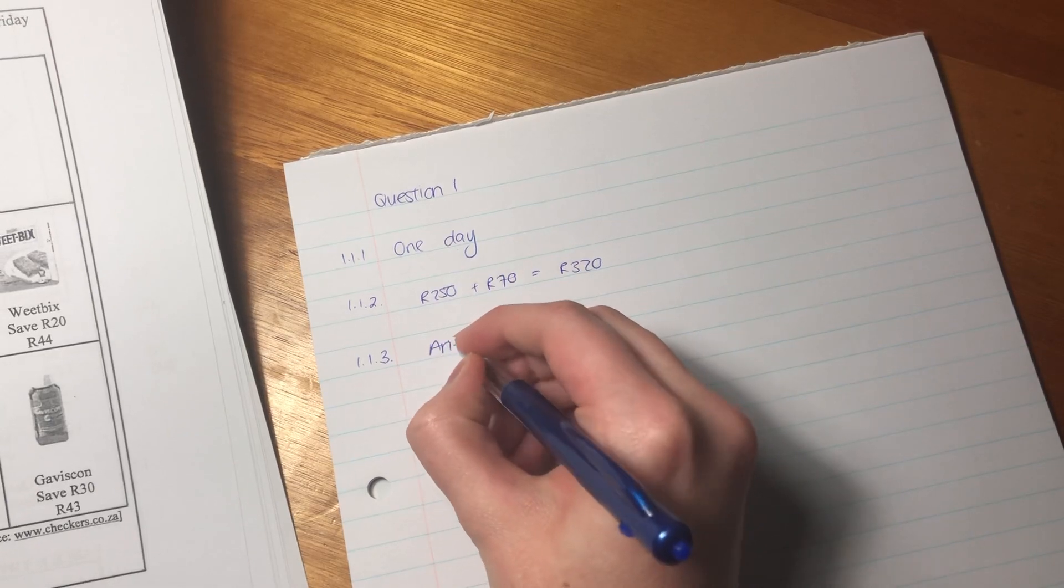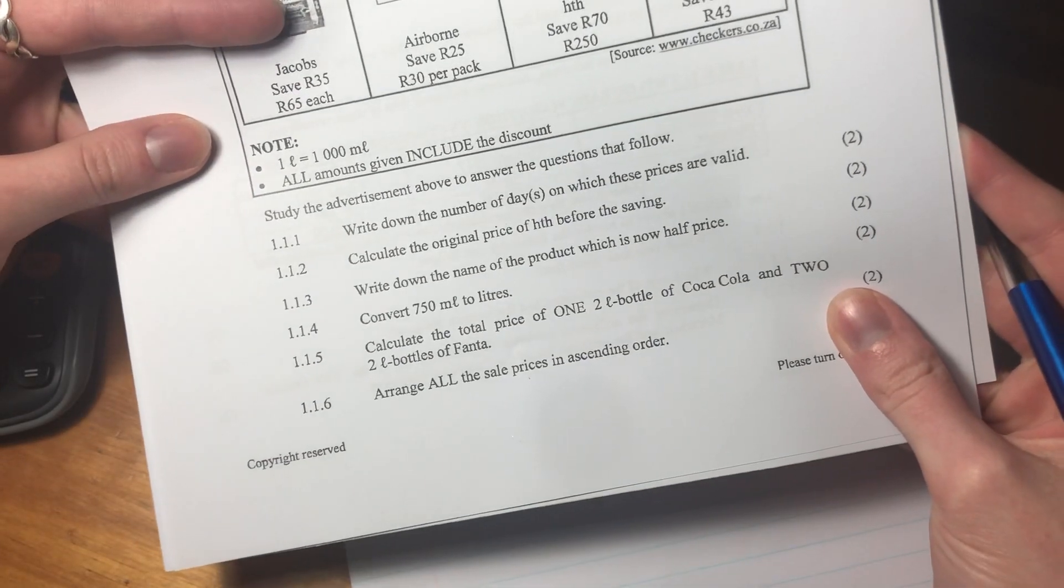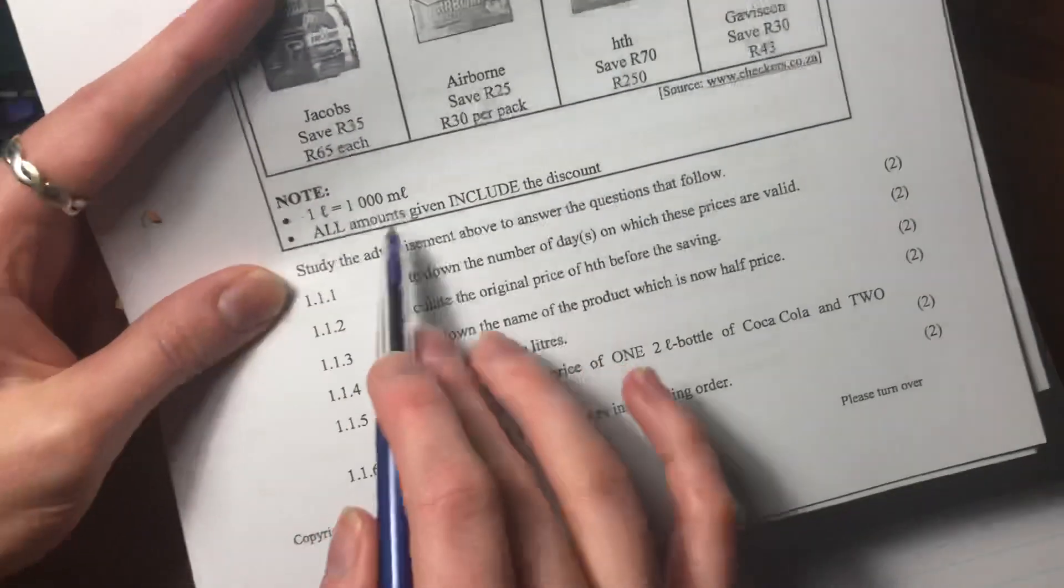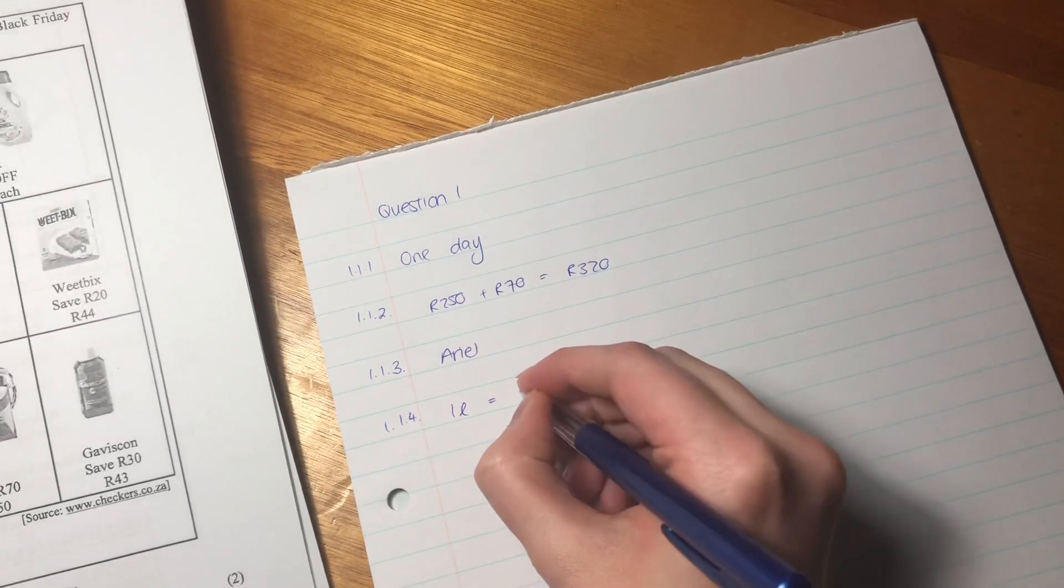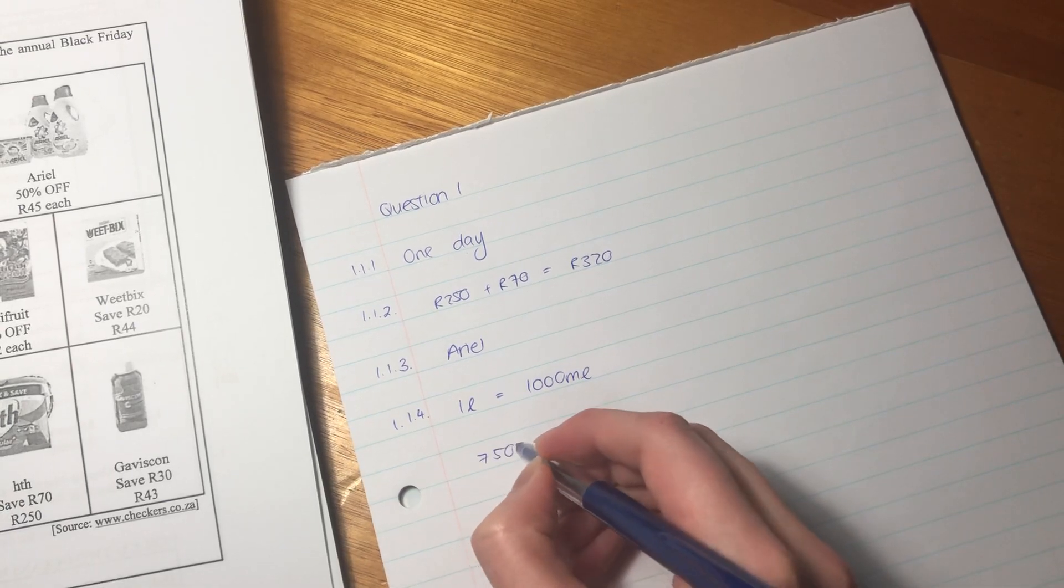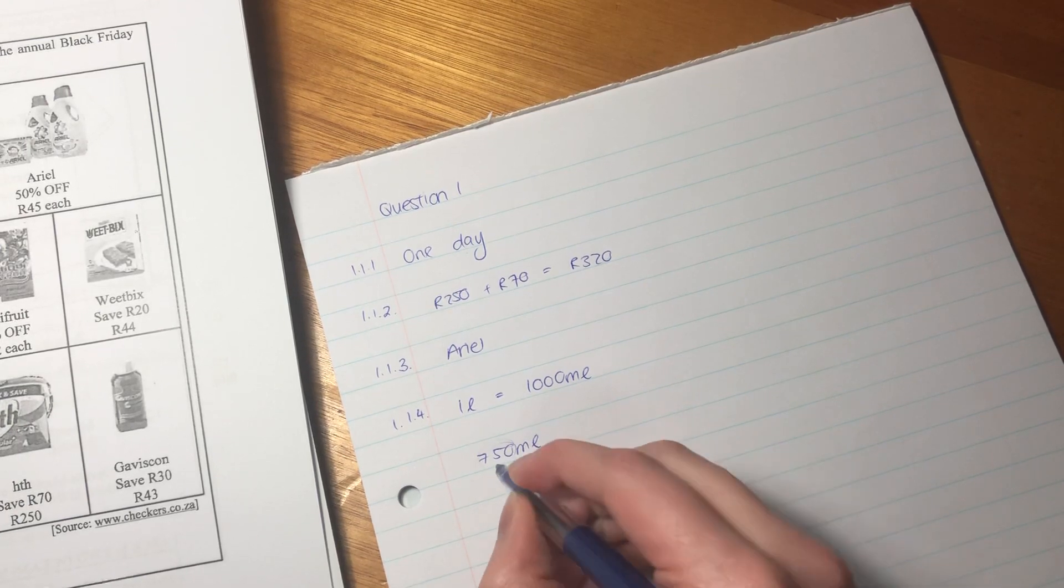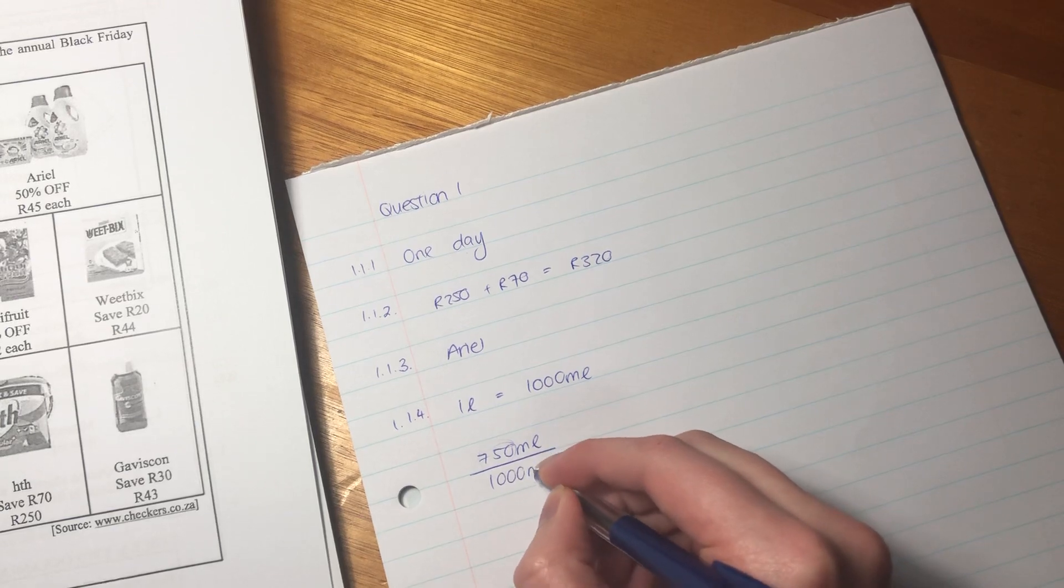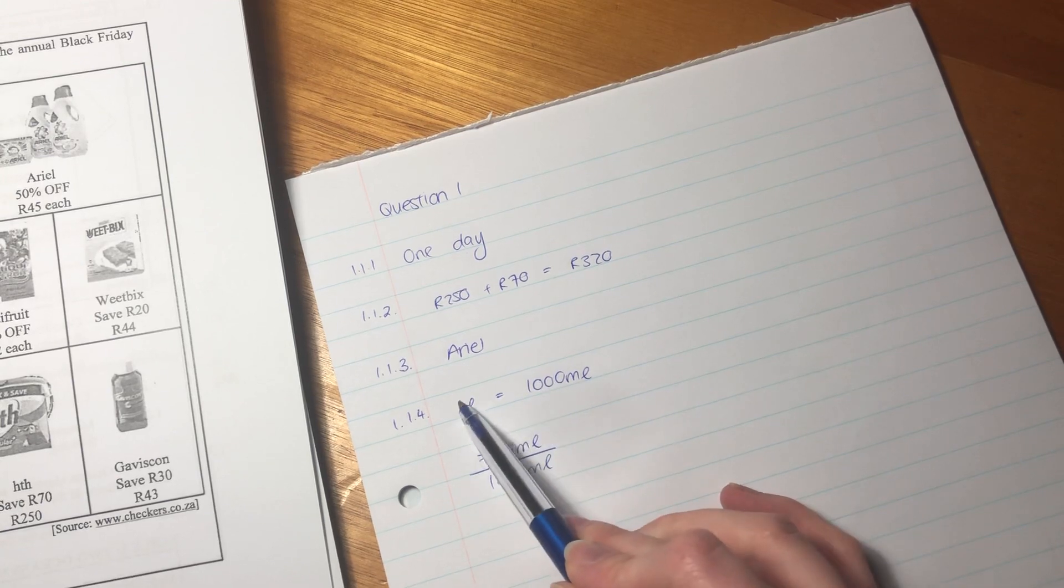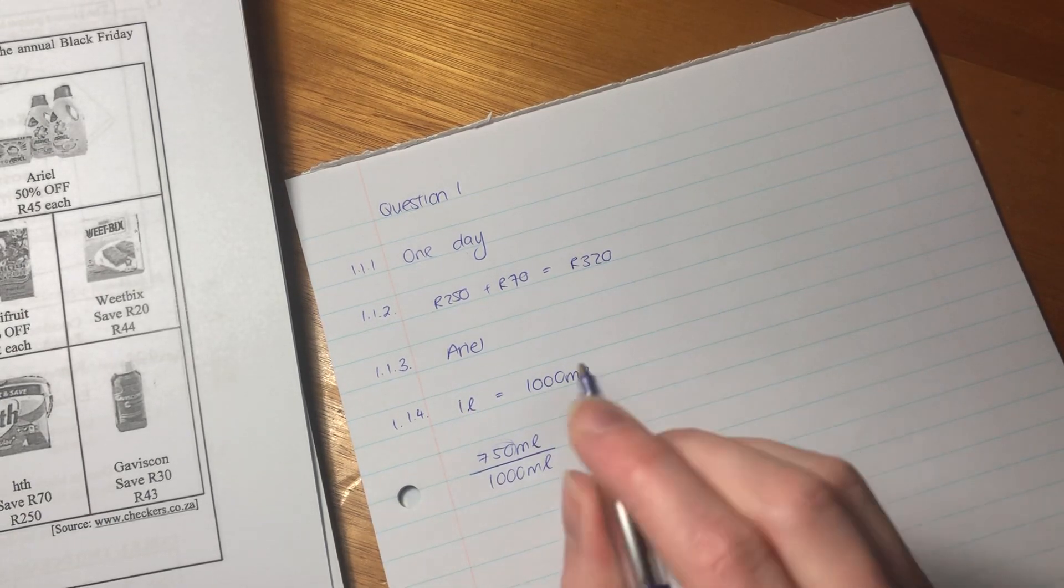1.1.4: Convert 750 milliliters to liters. We're given over here that one liter equals a thousand milliliters. We want to know how many liters is 750 milliliters, so we have to divide this by a thousand milliliters. Remember, we're going from something that is quite large and we're going to a smaller measure. We expect a smaller number because we're going to a larger measure.